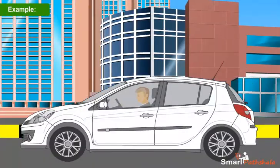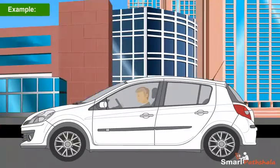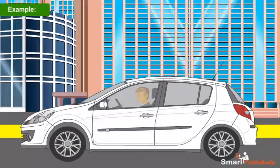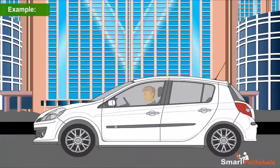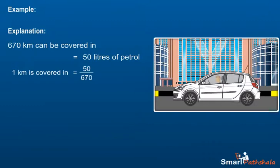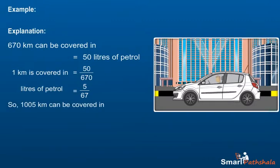Example. A car requires 50 litres of petrol to cover 670 km. How many litres of petrol are required to cover 1005 km? 670 km can be covered in 50 litres of petrol. 1 km is covered in 50 upon 670 litres of petrol, which is equal to 5 by 67. So 1005 km can be covered in 5 by 67 multiplied by 1005 litres, which is equal to 75 litres.